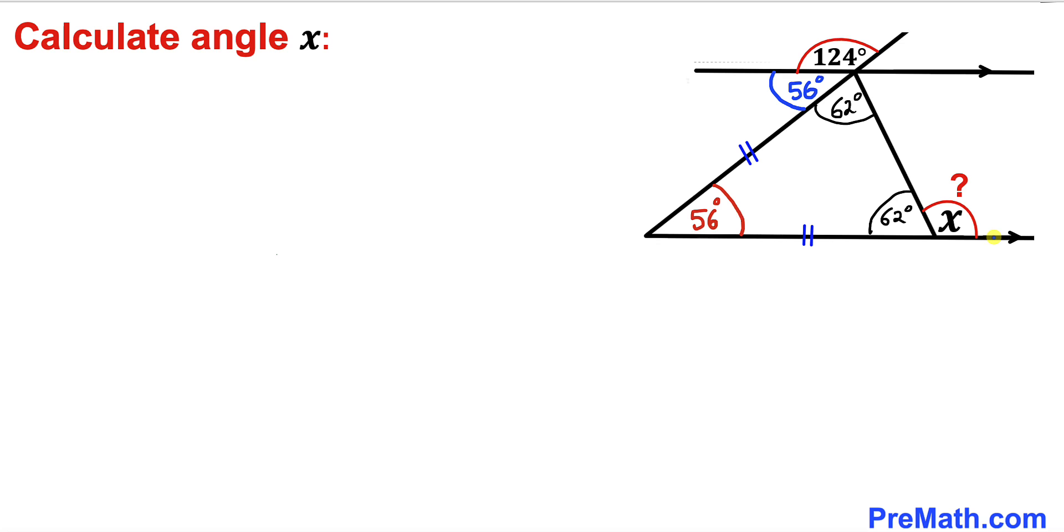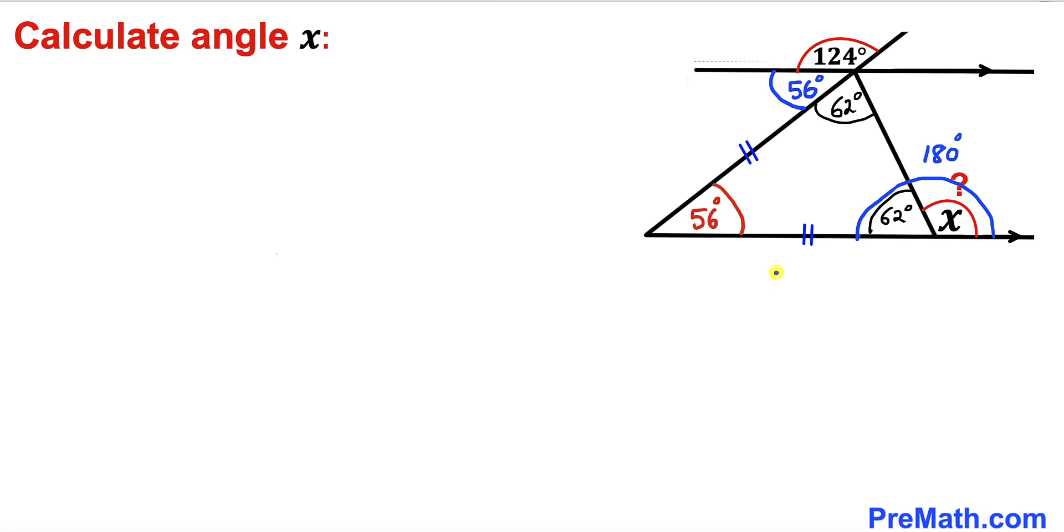Here's our final step. We know that this whole angle, this straight angle, is 180 degrees, and this is equal to the sum of these two individual angles. Therefore, we can write down 62 degrees plus angle x equals 180 degrees.